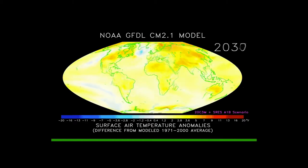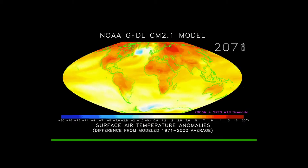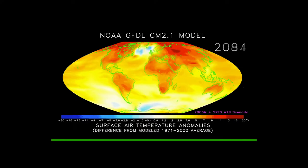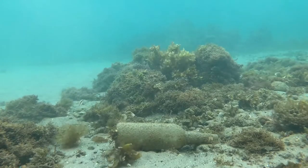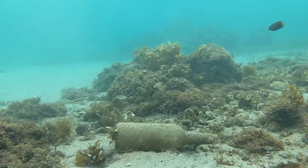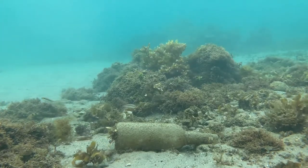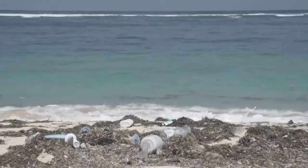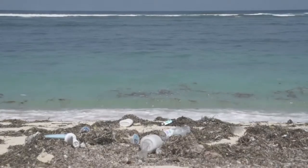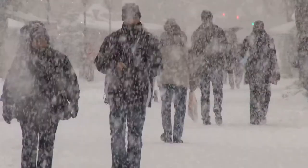Our climate conditions are the result of complex interactions among processes occurring in the atmosphere and the ocean. These processes operate at global and local scales and are influenced by other factors including the land surface, polar ice sheets, and the sun. This is why we experience different climatic conditions in different places.